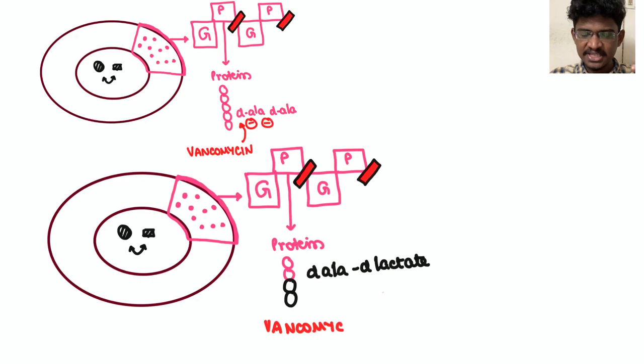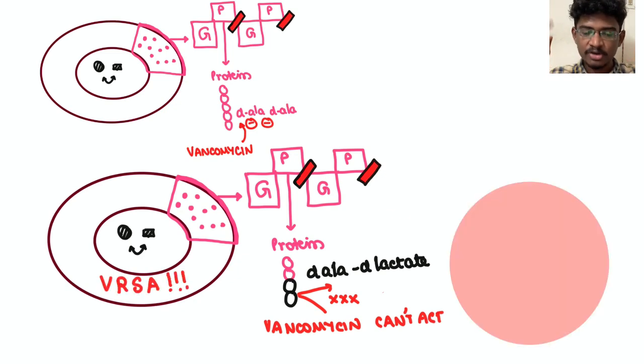So this vancomycin was proving to be successful. So what the bacteria cleverly did was: what is your binding point? D-ala-D-ala. So let me change it into D-ala and D-lactate. Now vancomycin was confused, it couldn't bind. So there appeared this clever organism resistant to vancomycin, VRSA.